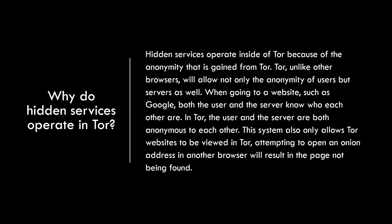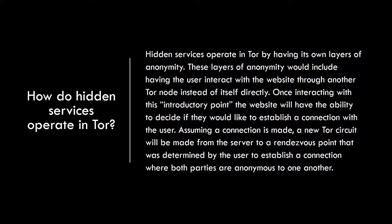Hidden services operate on Tor because of the anonymity it provides — both the server and the user remain anonymous to one another. On a normal browser like Chrome or Firefox, both parties know who each other are. Unlike connecting to Google through Tor where we still know who we're connecting to, hidden services go through their own pathing process to remain anonymous as well.